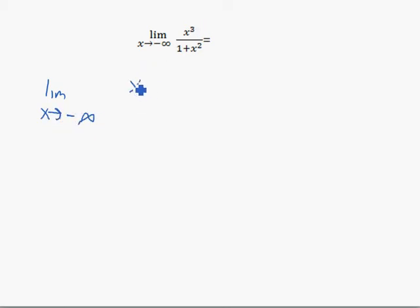This limit has to be the same thing as the limit as x goes to negative infinity of x cubed over x squared, which simplifies down to the limit as x goes to negative infinity of x. And if x goes to negative infinity, then the answer is negative infinity.